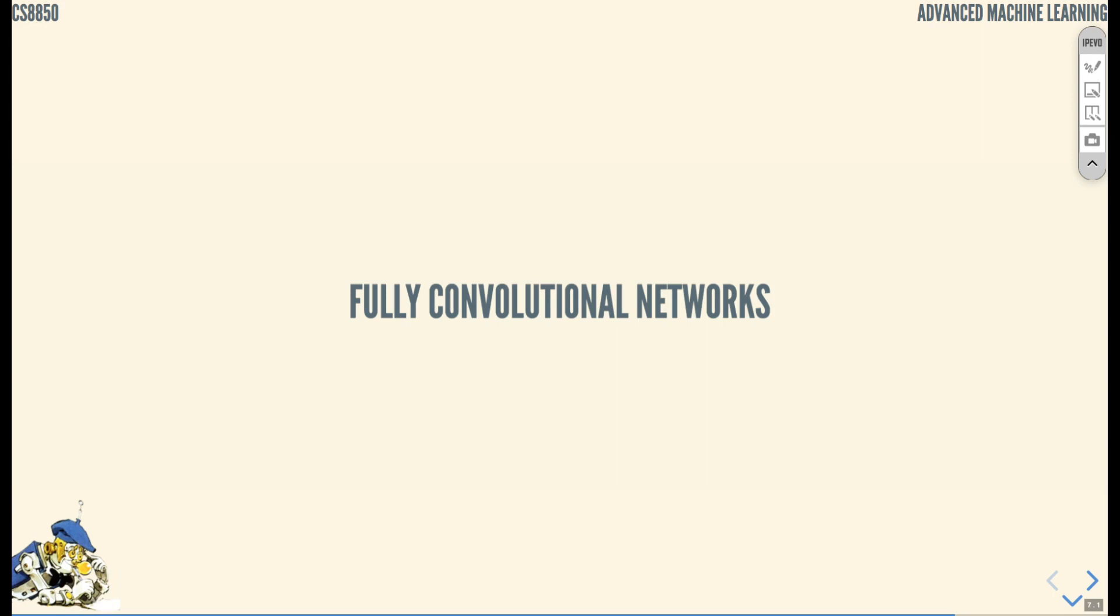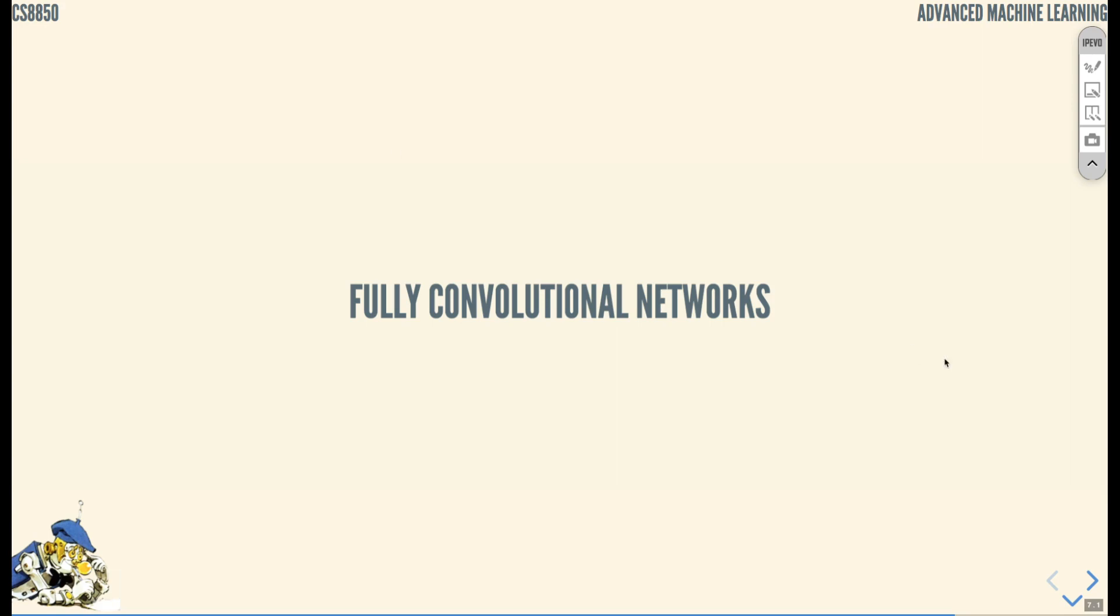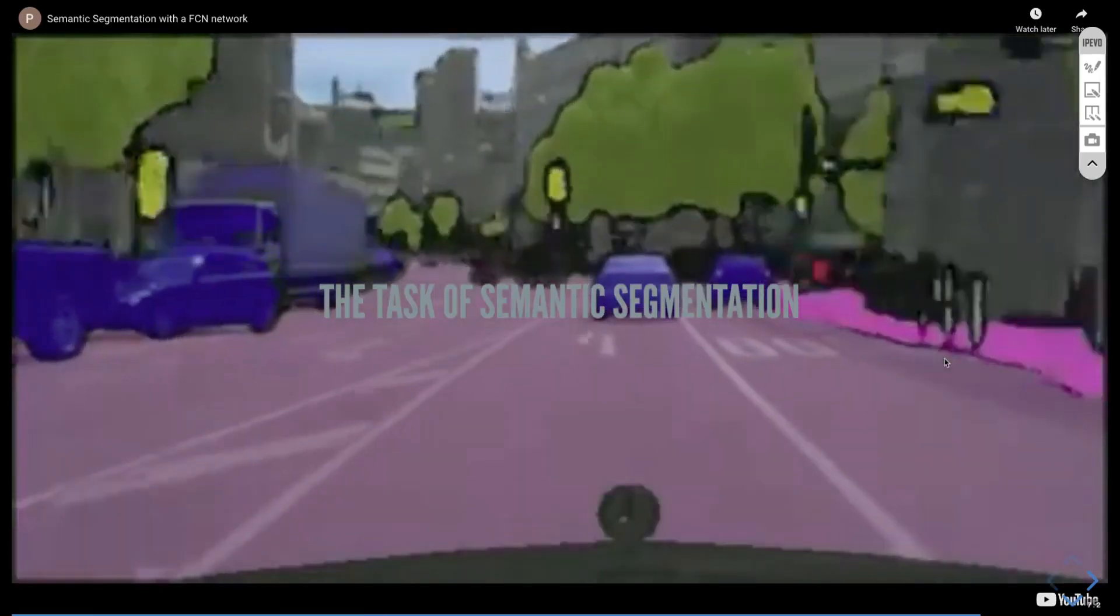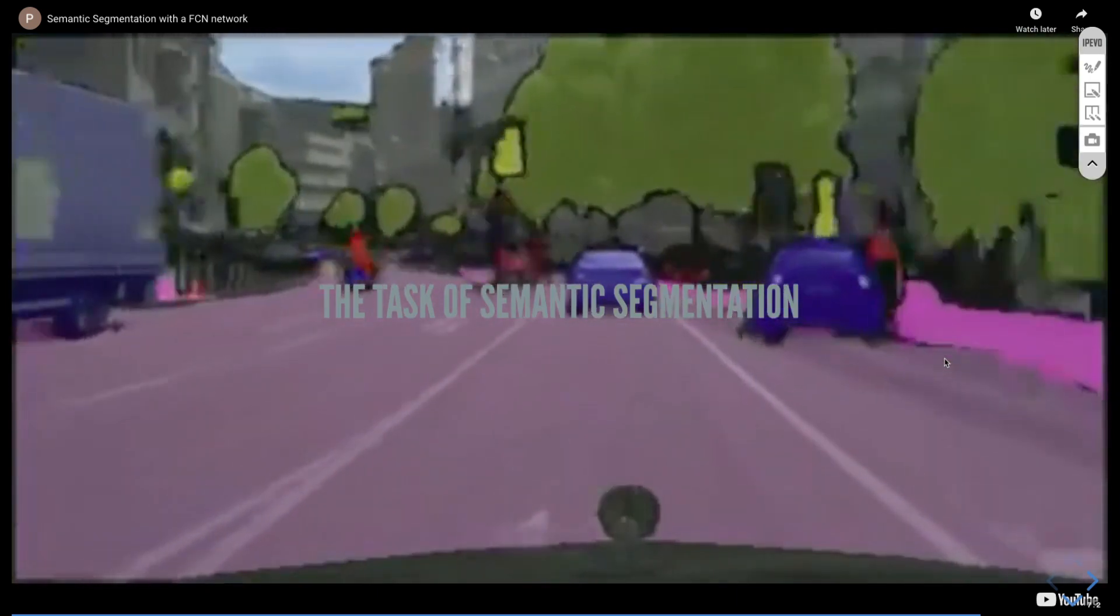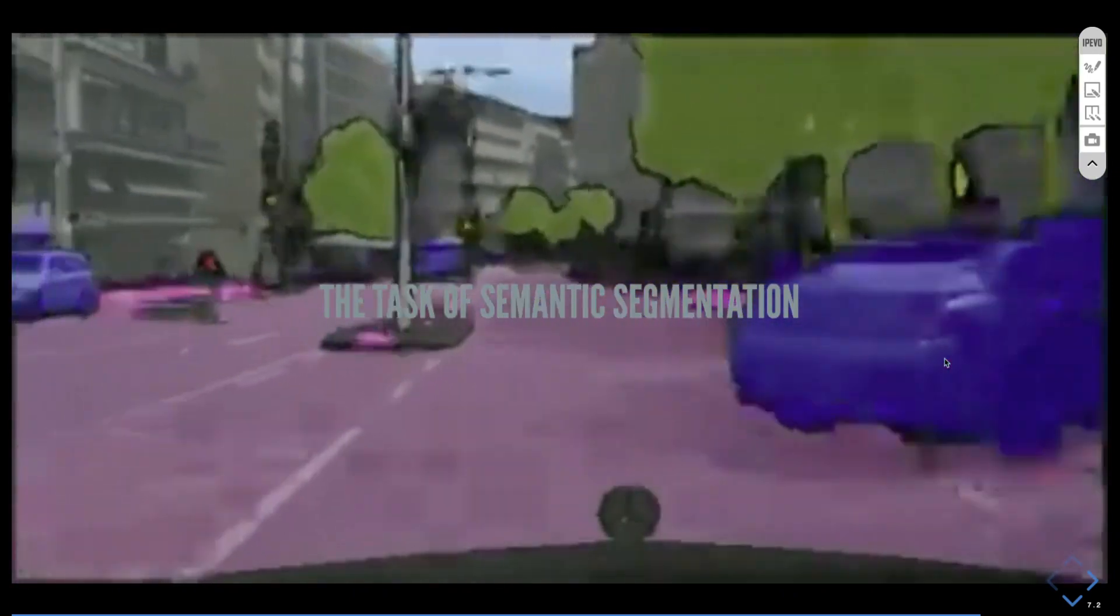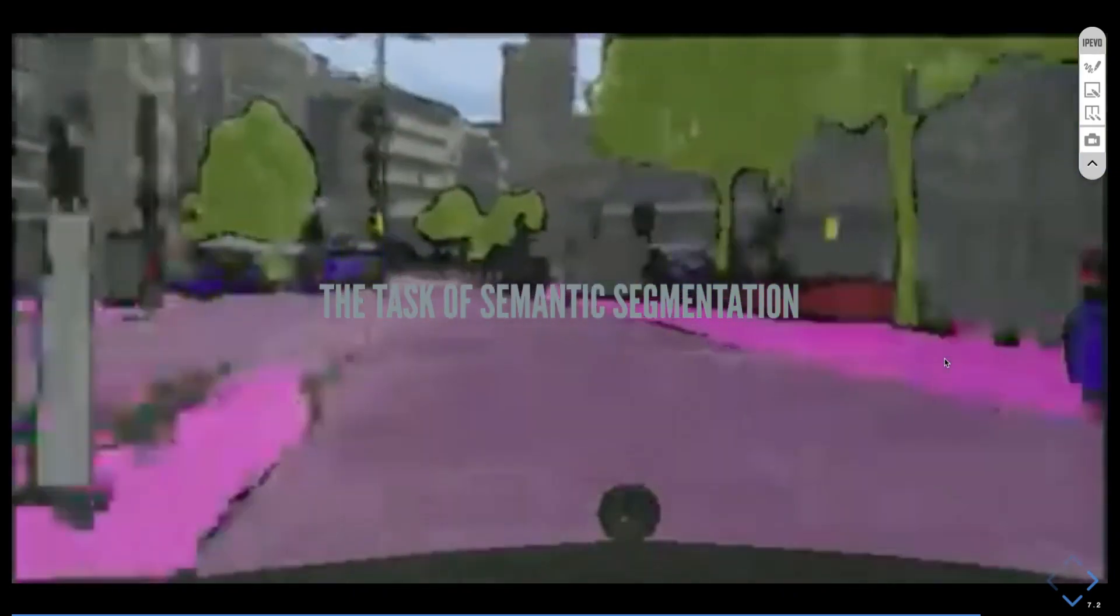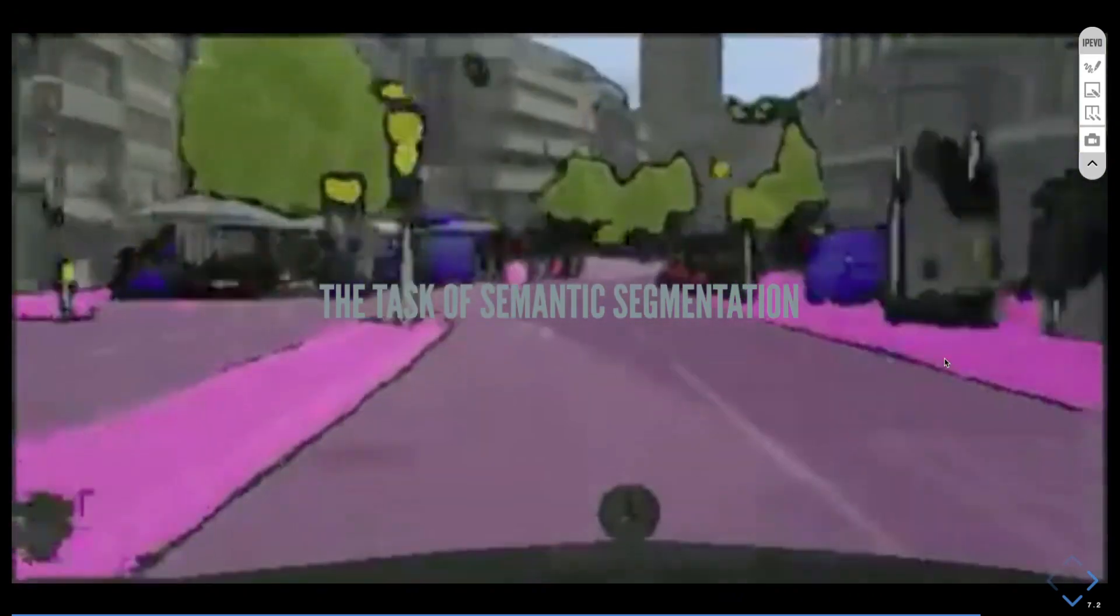The task of semantic segmentation: imagine or observe on the screen that you have this task where you have an environment or video from an environment—an image—and each pixel of your image has a label.